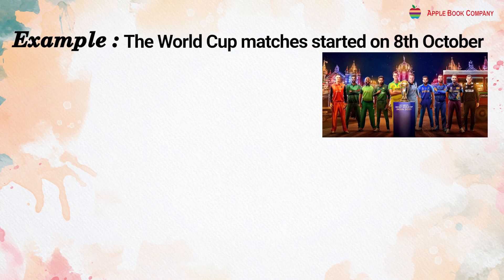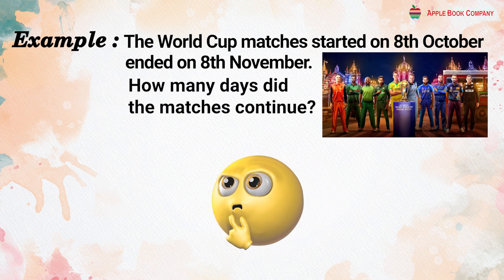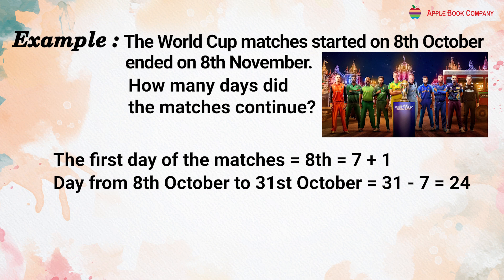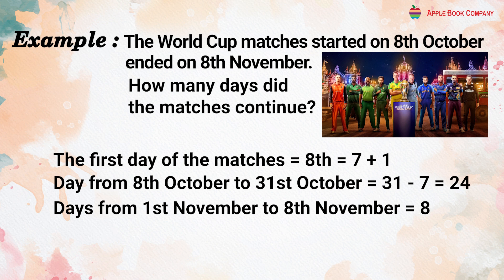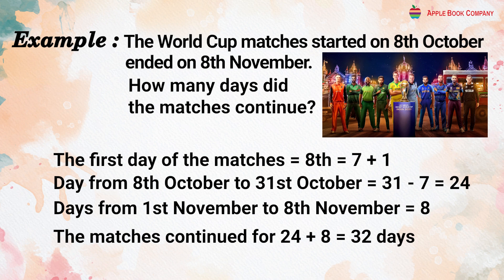Example: The World Cup matches started on 8th October and ended on 8th November. For how many days did the matches continue? Days from 8th October to 31st October = 31 − 7 = 24 days. Days from 1st November to 8th November = 8 days. The matches continued for 24 + 8 = 32 days.